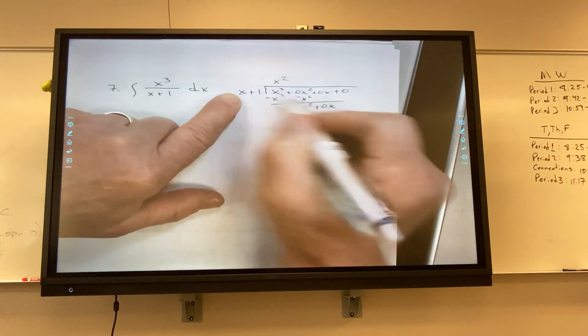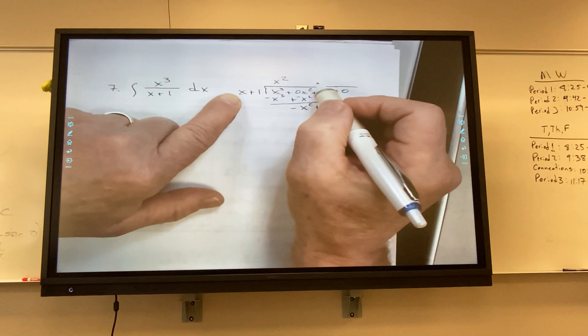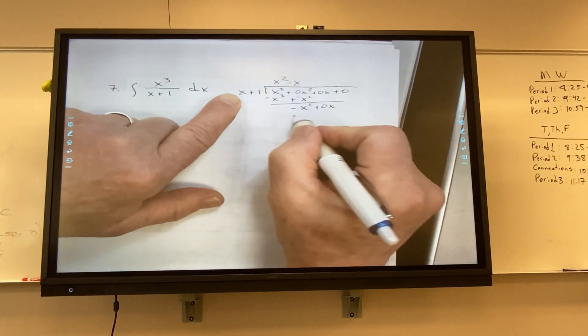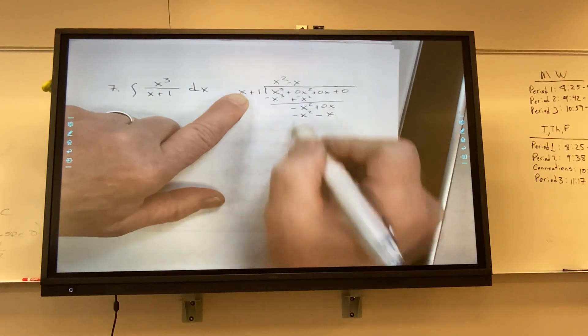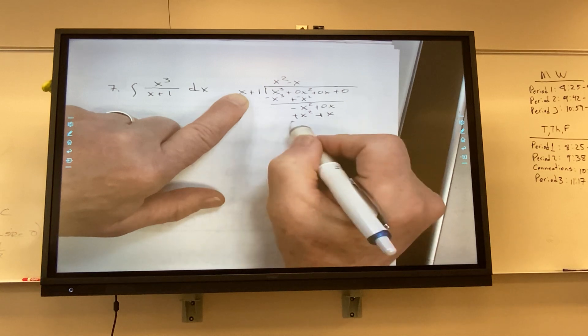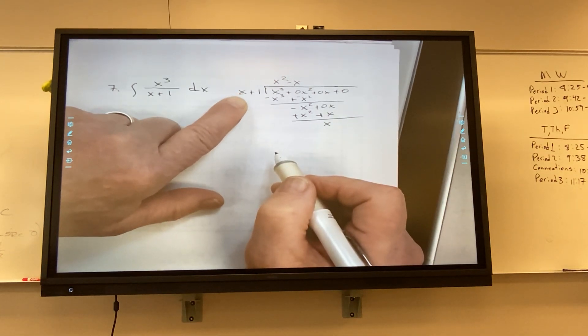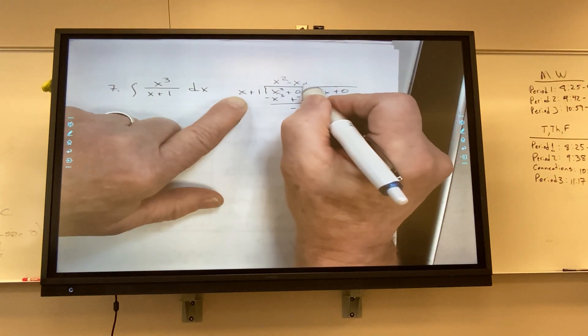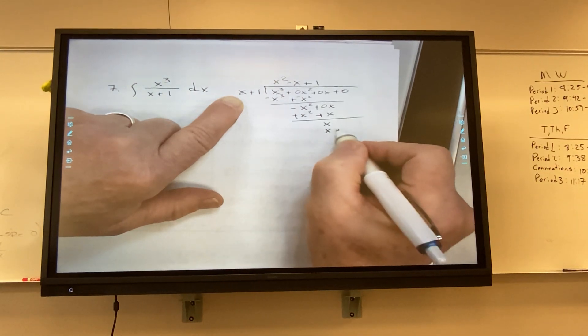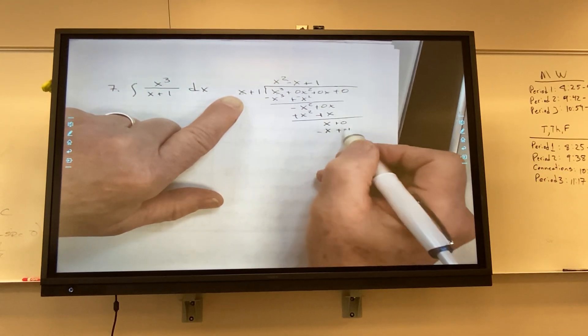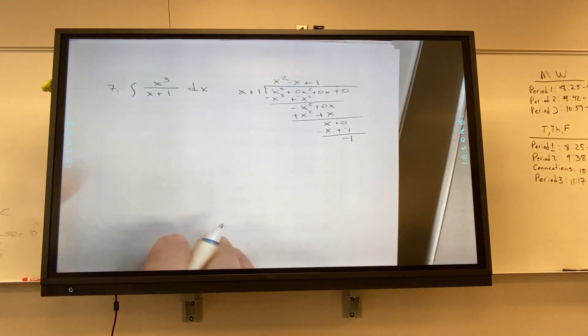X squared. X squared. So I get x cubed plus x squared, would you agree? Negative, negative. So this becomes a negative x squared plus zero x, would you agree with that? So what am I going to multiply x to make it a negative x squared? Negative x. Negative x, you're doing beautiful. Negative x squared and then when I multiply that I get a minus x, would you agree with that? Change the signs and add. And I get x.